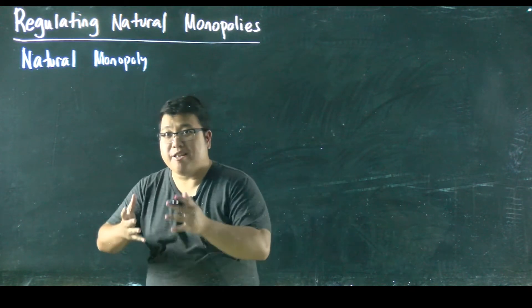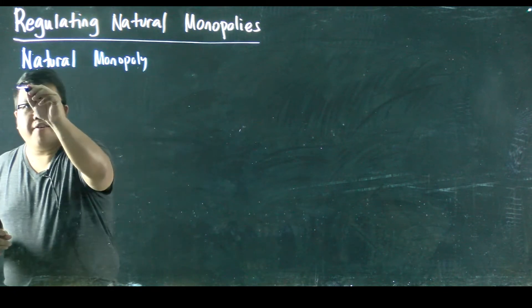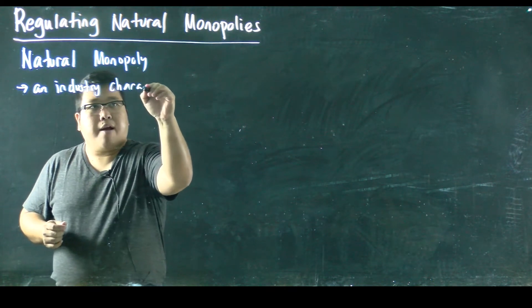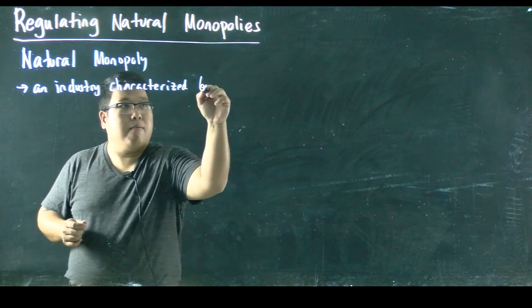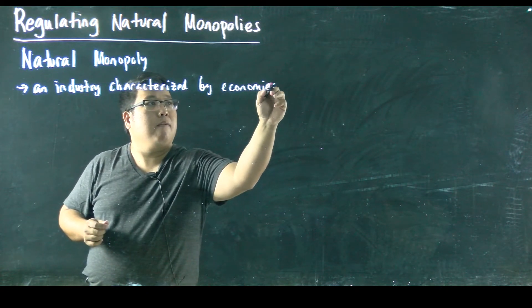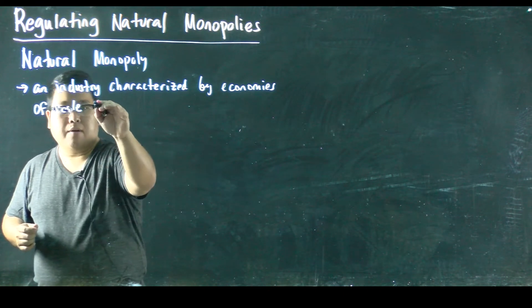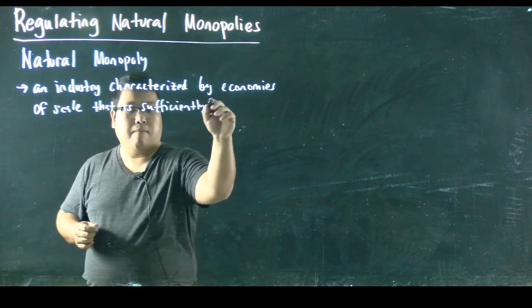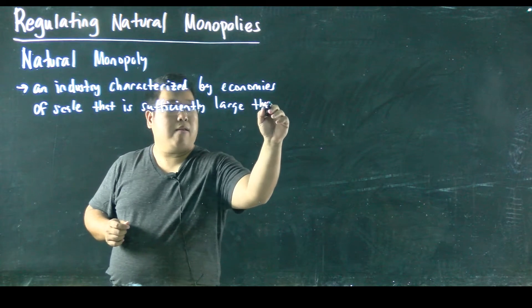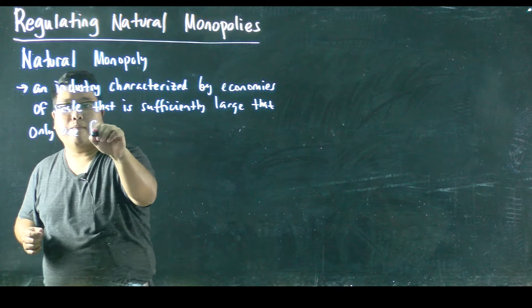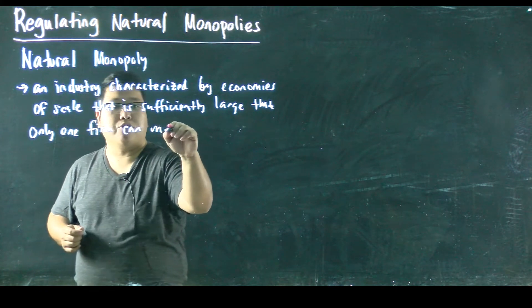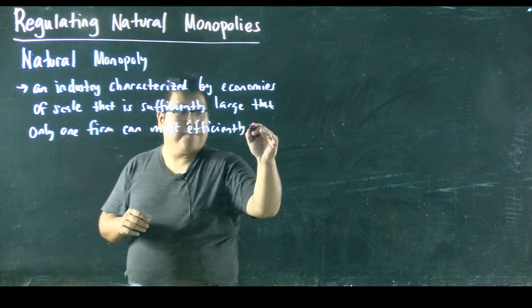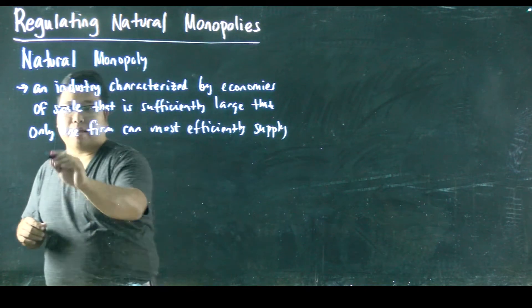So in other words, monopolies arise naturally in these situations. So by definition, a natural monopoly is an industry characterized by economies of scale that is sufficiently large that only one firm can most efficiently produce this good or service or can most efficiently supply the entire market demand.